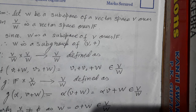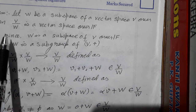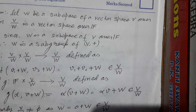Like in group theory we have a quotient group. To define a quotient group, the subgroup at the bottom should be a normal subgroup. In the case of a ring, if you want to define a quotient ring, the element below should be an ideal.